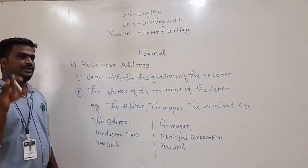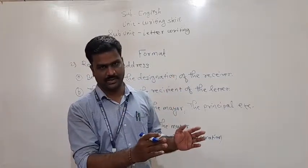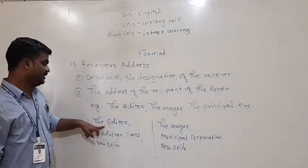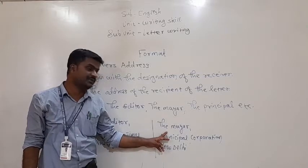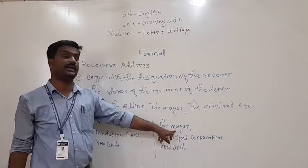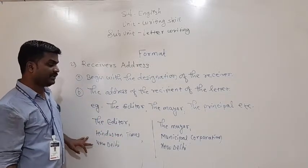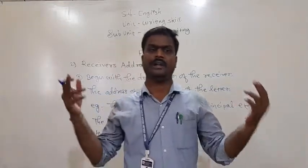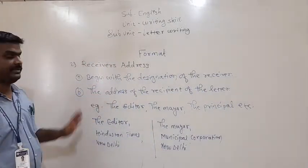For example, if you want to publish a problem in a newspaper, you write this letter to the editor — so you write the designation 'The Editor.' If you are writing to the mayor about a local problem, you write 'The Mayor.' You mention the designation and the address of the recipient — for example, 'The Editor, The Hindustan Times' or 'The Mayor, Municipal Corporation.' The same applies if you are writing to the principal or any other concerned authority.